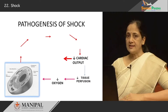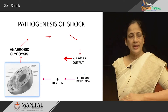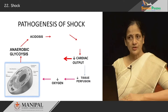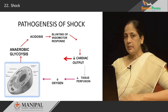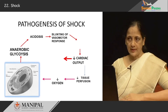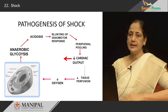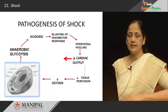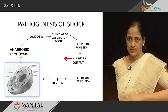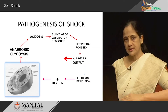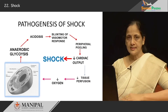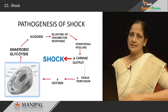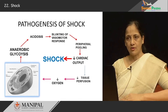There is another factor acting in the pathogenesis of shock. Whenever anaerobic glycolysis occurs and acidosis results, there is blunting of vasomotor responses, which results in blood pooling in the peripheral circulation. This in turn decreases venous return to the heart and therefore reduces cardiac output, again causing decreased tissue perfusion and decreased oxygen supply to the cells. In essence, these are the various mechanisms that come together in shock, which ultimately result in multiple organ failure and death of the patient.